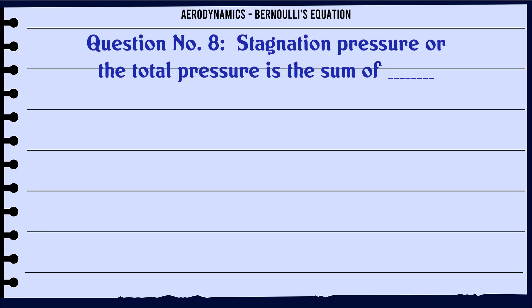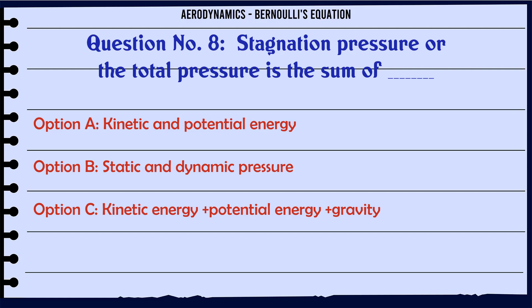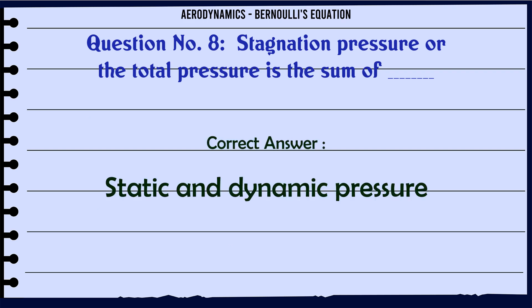Stagnation pressure, or total pressure, is the sum of: A. Kinetic and potential energy. B. Static and dynamic pressure. C. Kinetic energy, potential energy, and gravity. D. Cannot be determined. The correct answer is static and dynamic pressure.